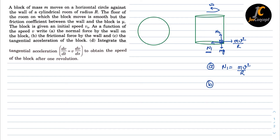For part (b), we calculate the frictional force by the wall on this object. The friction f equals mu times N1, so f equals mu times mv²/r.